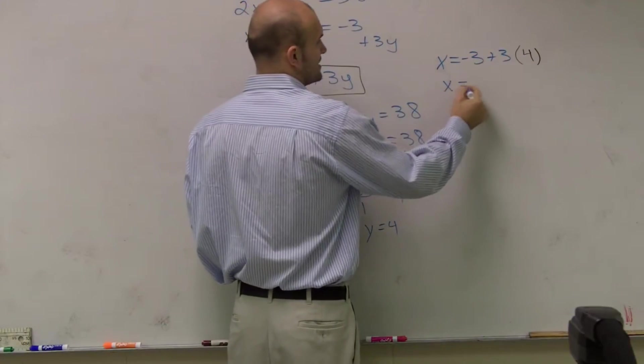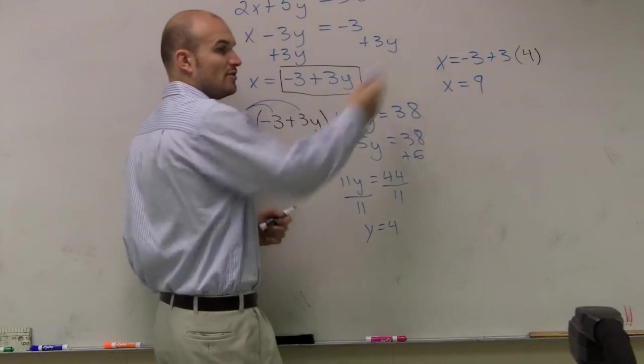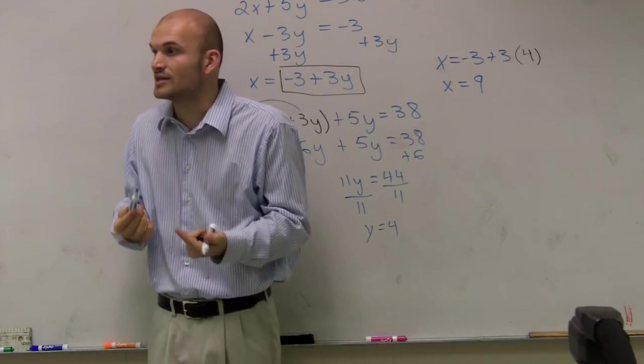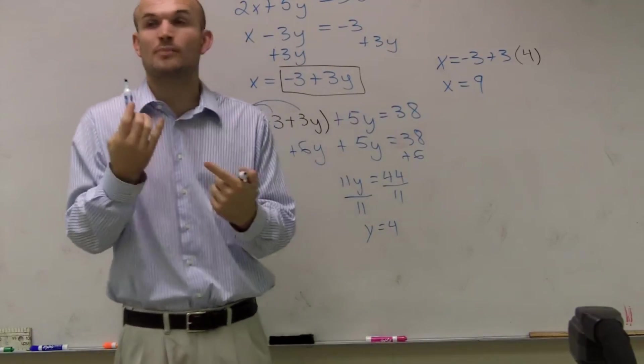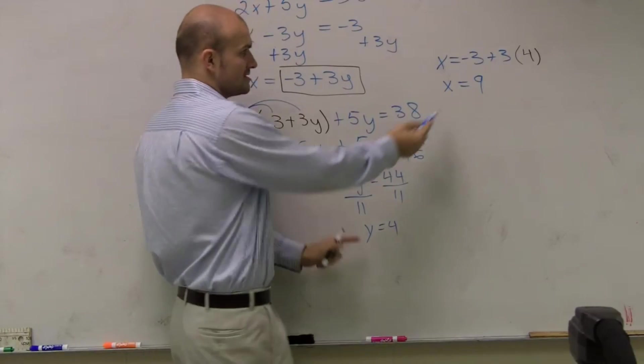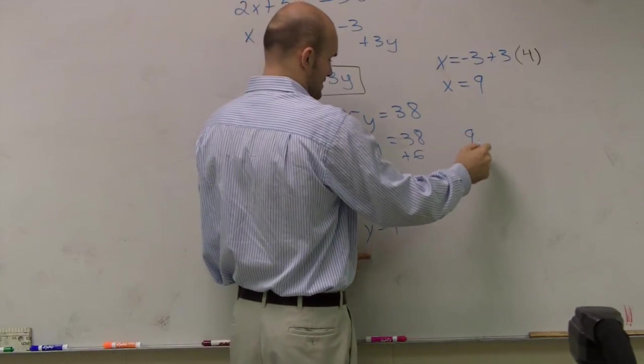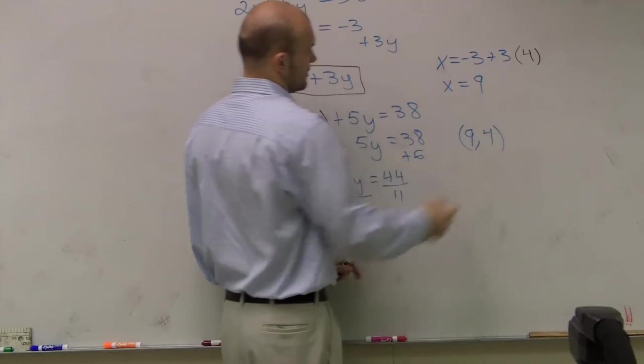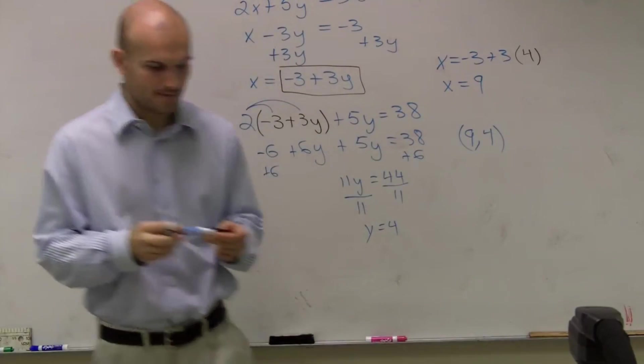So therefore, x equals 9. So remember, a substitution is telling us where our two systems intersect, what point they share. And since they share exactly one point, I can write it as a coordinate point, which is 9 comma 4. That's it.